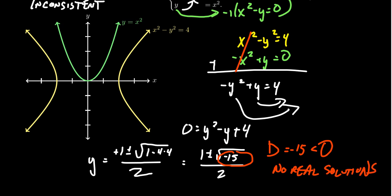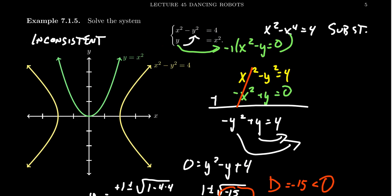If I want to graph this thing with complex variables, then we'll get intersections. But for the real number system, these things don't intersect. And that's what we mean here by inconsistent.